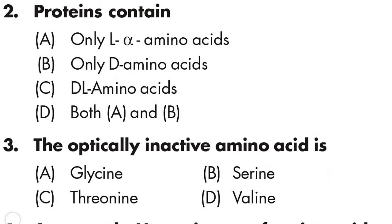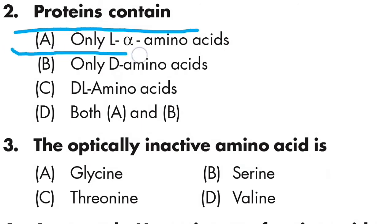Question number two: proteins contain which type of amino acids? Option A is only L-alpha amino acids, Option B is only D amino acids, Option C is DL amino acids, Option D is both A and B. The correct answer is Option A: only L-alpha amino acids.